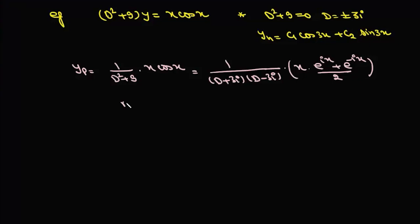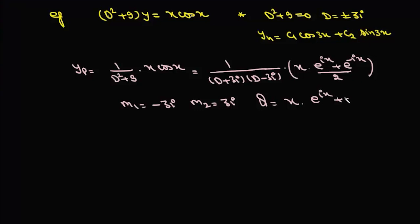Here m₁ = −3i, m₂ = 3i, and q is x times (e^(ix) + e^(−ix)) / 2.